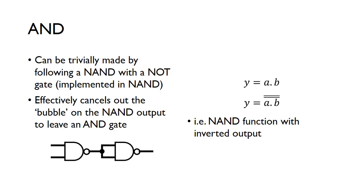So now in order to make an AND gate, we can very easily do this. If we get a NAND gate and then follow it with a NOT gate, it's essentially going to cancel the inverter on the end of the NAND gate to take it back to be an AND function. So we cancel this bubble on the NAND output to just leave an AND gate.